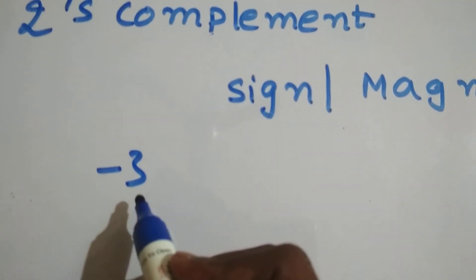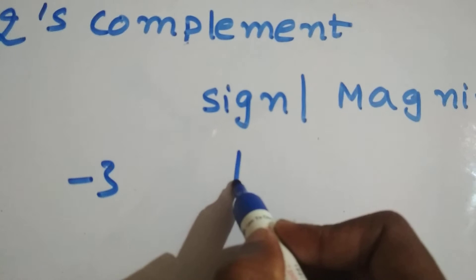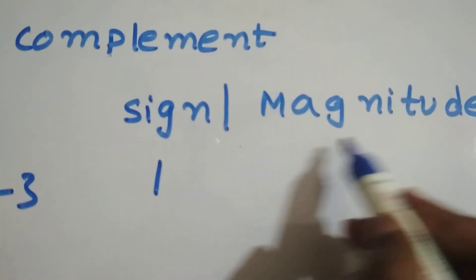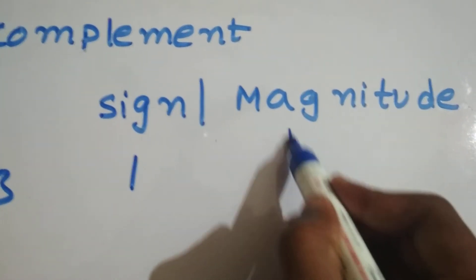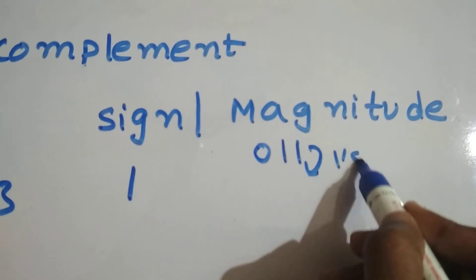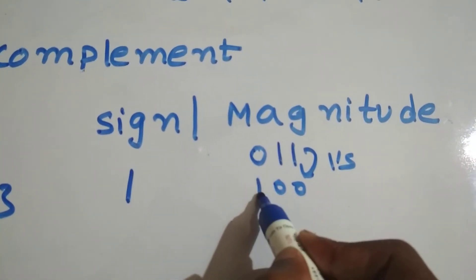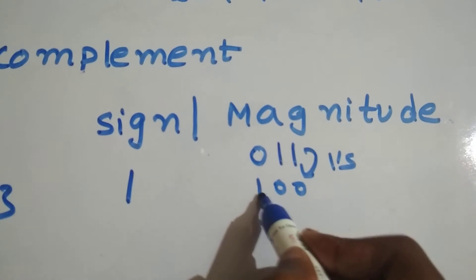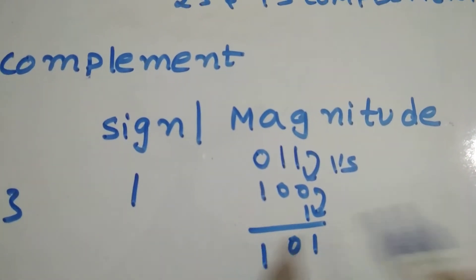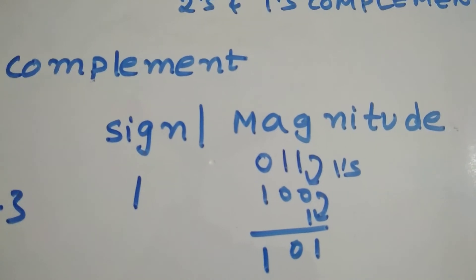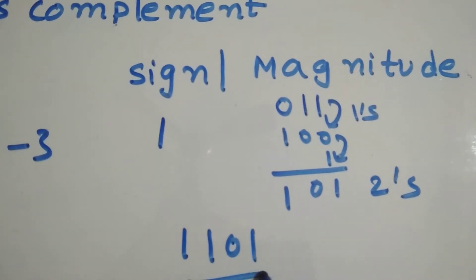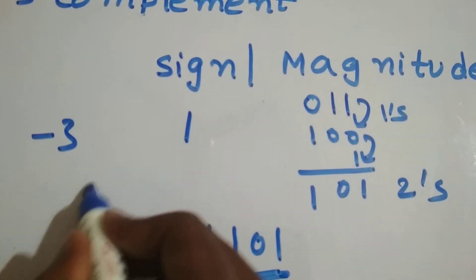Let's take another example: minus 3. The sign bit is 1. The magnitude 3 in binary is 0 1 1. One's complement of 0 1 1 is 1 0 0, then add 1 at LSB to get 1 0 1. Combining with the sign bit, minus 3 in two's complement is 1 1 0 1.